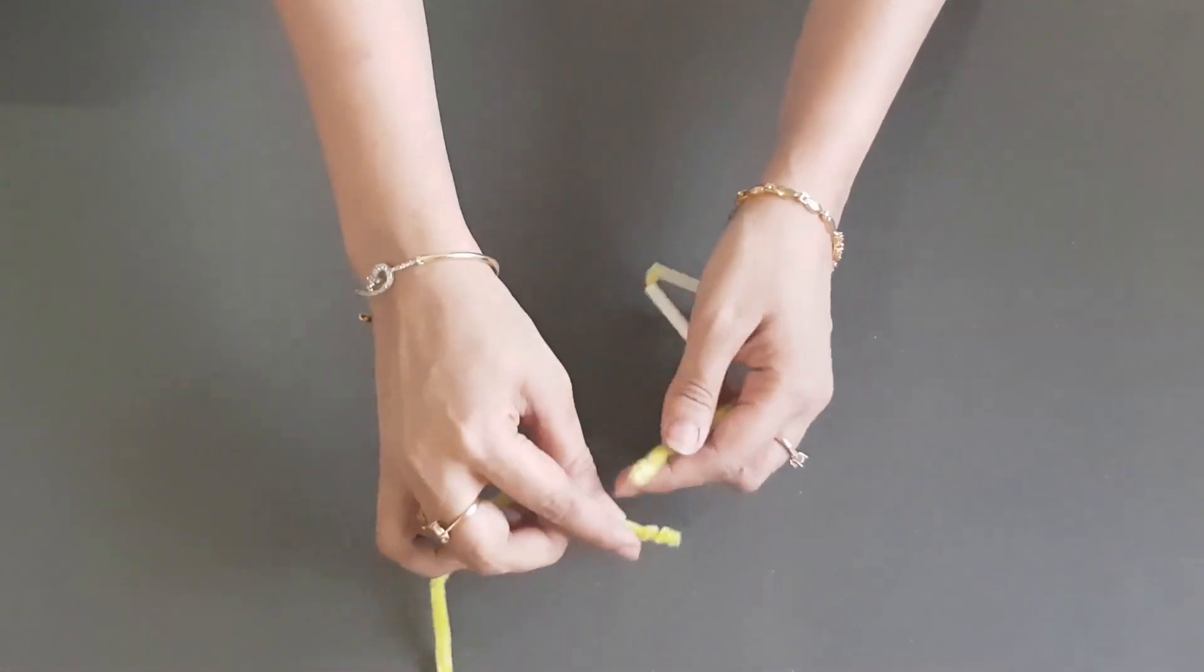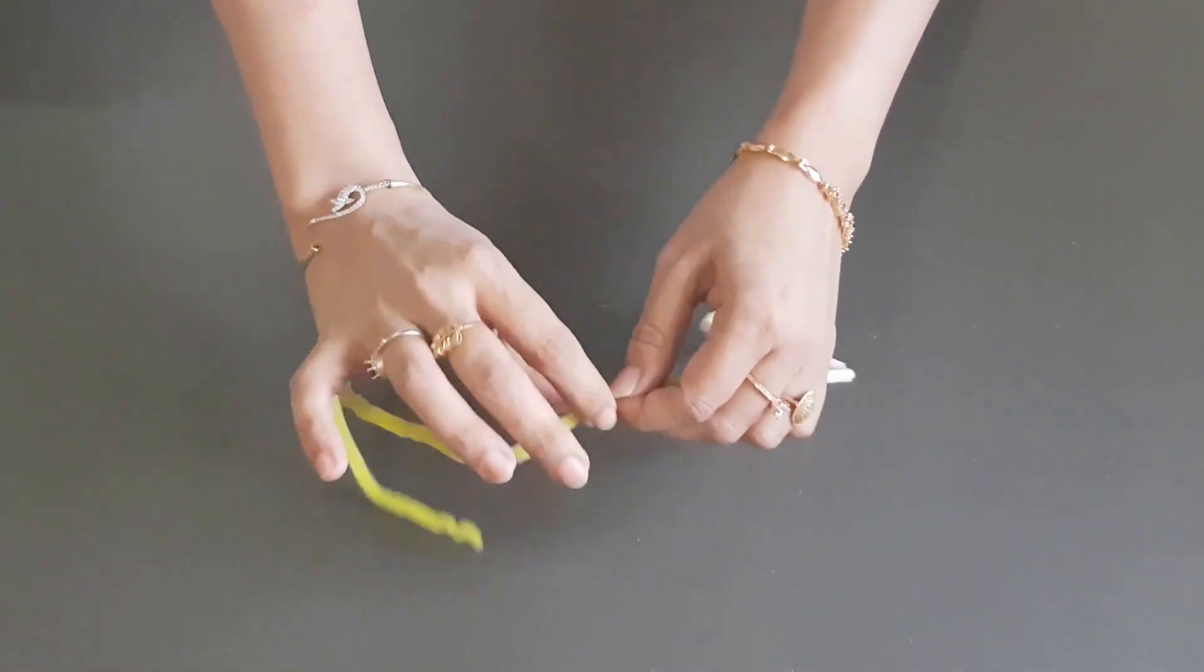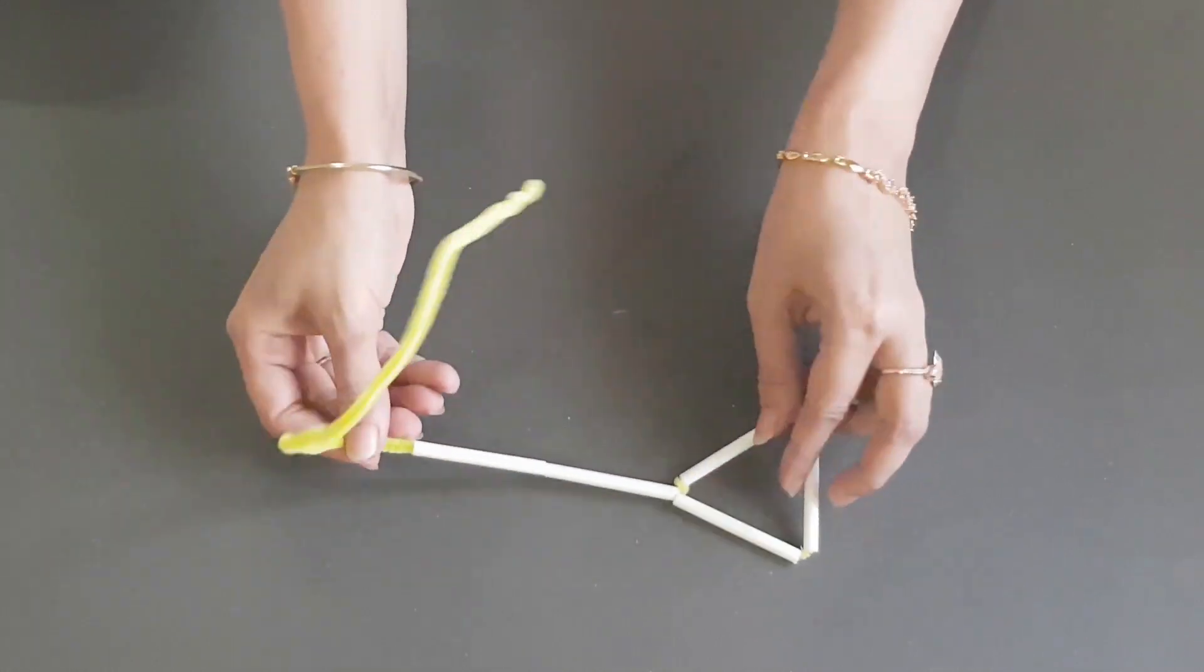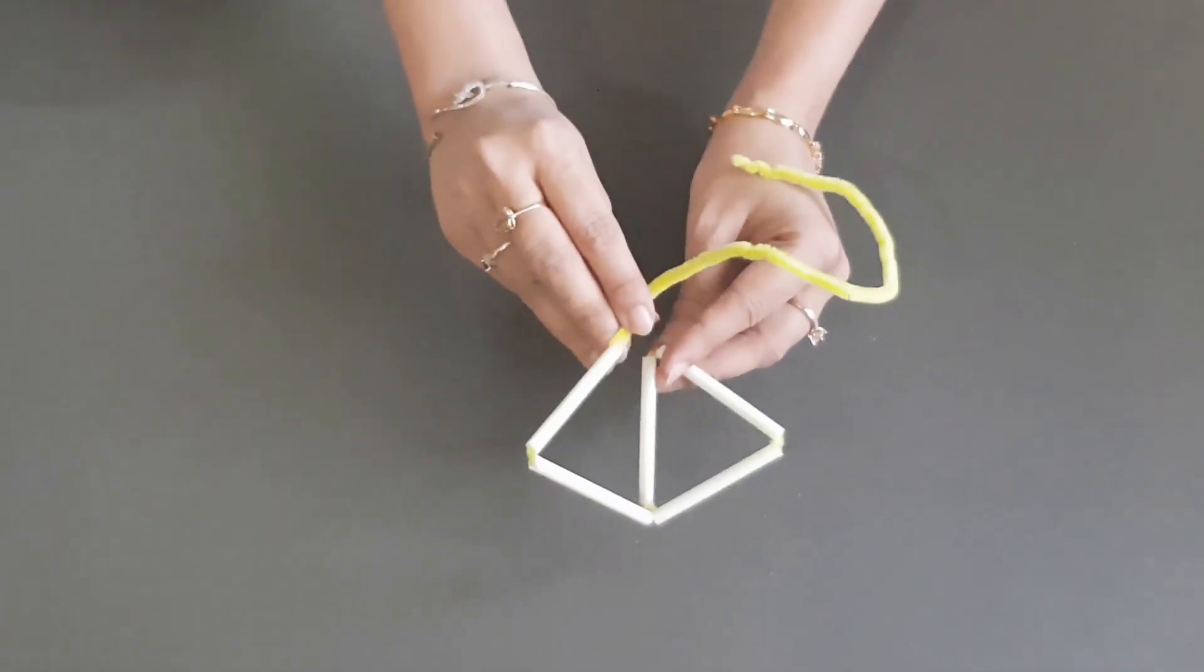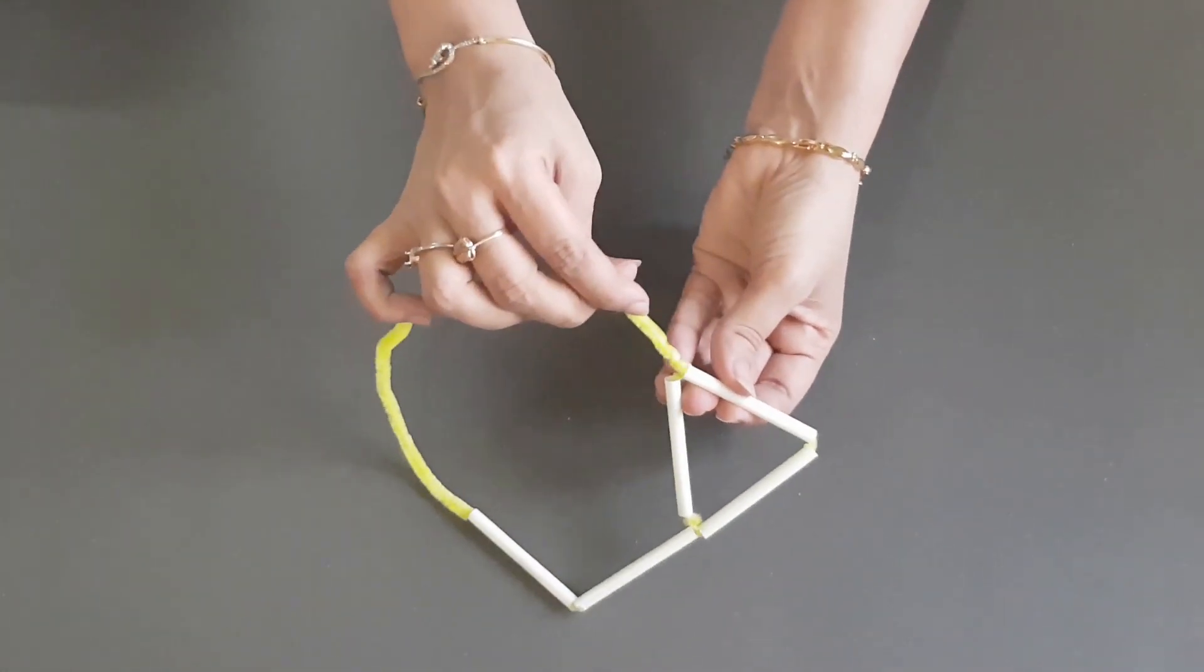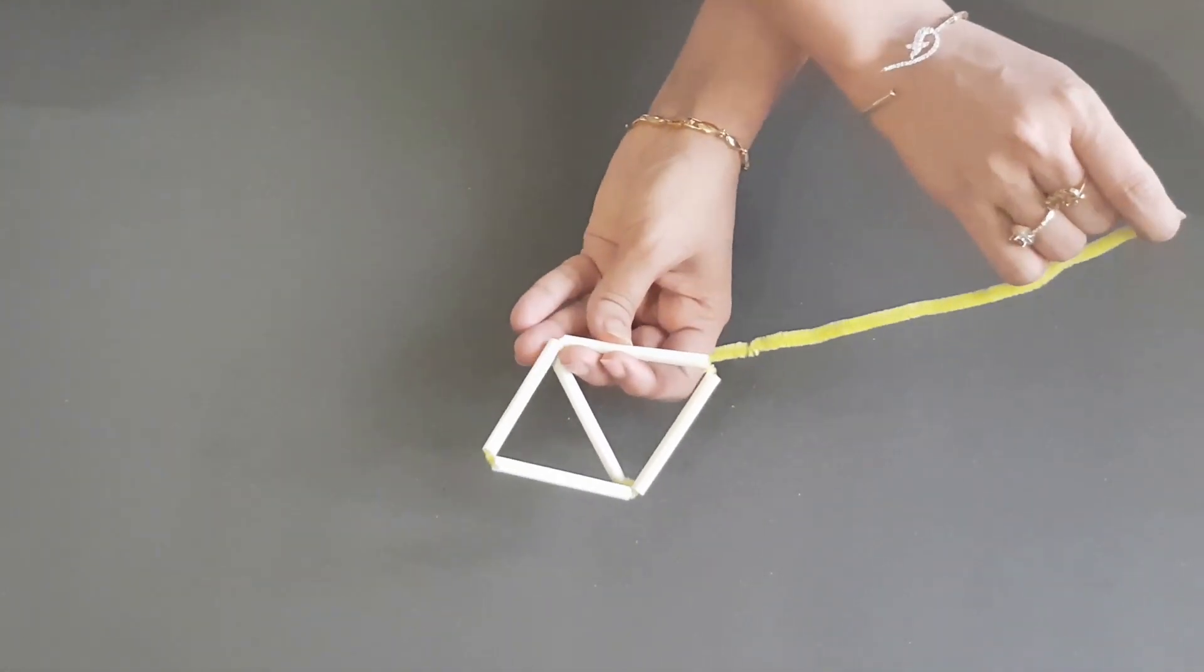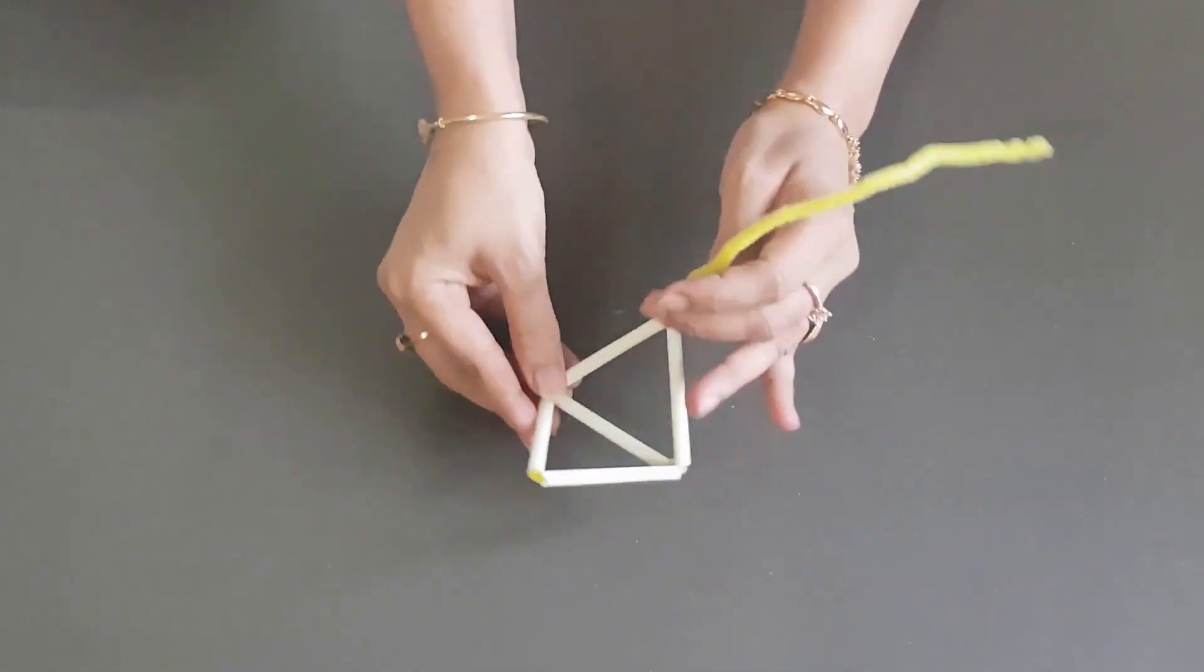I'll be needing another pipe cleaner. So I'm going to twist the older one with the new one like this. And I have a longer pipe cleaner now. I need two more straws and now I'm going to bend it and make this end go through this straw so that it comes out from the other end. And now we nearly have the pyramid ready.